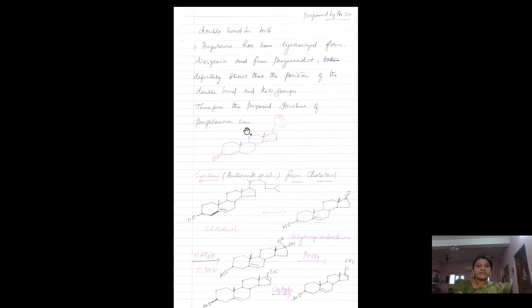Here, now we have predicted the position of the double bond is between the 4th and 5th position, this position. And also, it can be synthesized from diosgenin and pregnane diol. This suggests the position of keto groups also - one of the keto groups is at position 3, and the 20th carbon is a keto carbon. And therefore, this is the predicted structure for progesterone.